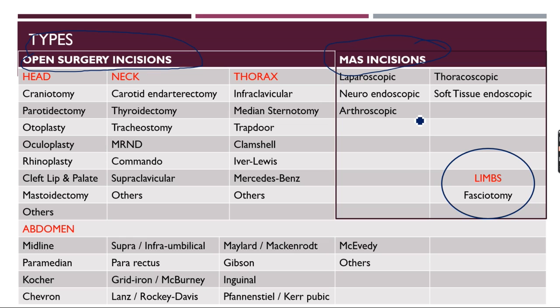In minimal access surgery, incisions are basically for insertion of ports. We will later on discuss in a subsequent part the baseball diamond concept of putting incisions in minimal access surgery with a target organ approach. In the limbs, for example, how to place an incision for fasciotomy — a very commonly required procedure — will all be discussed in subsequent groups.